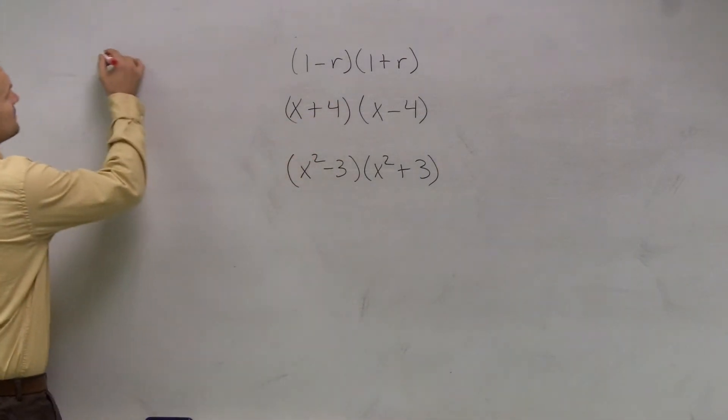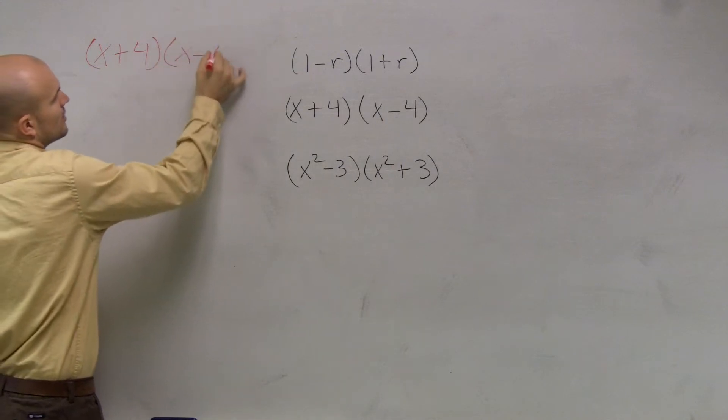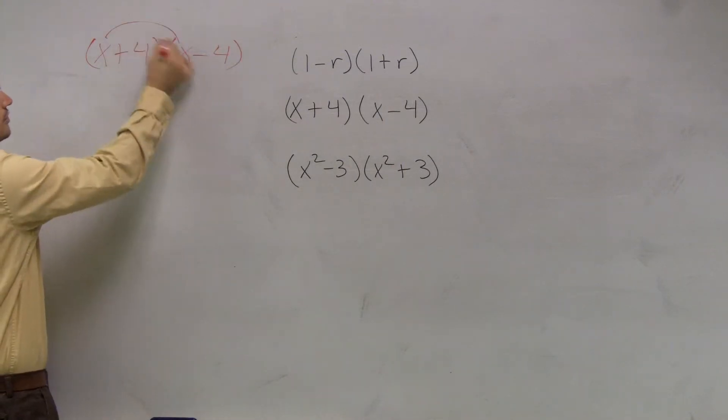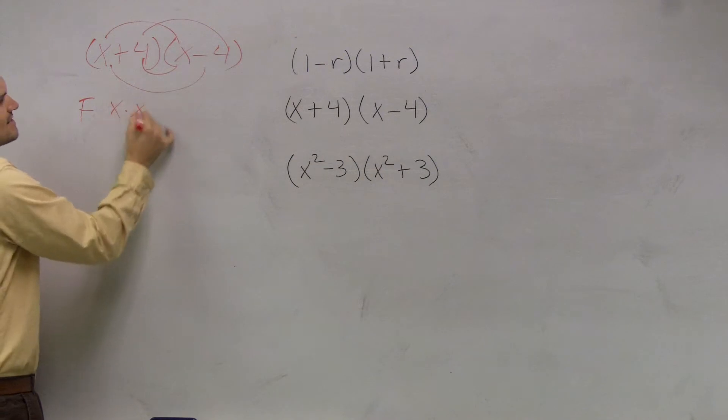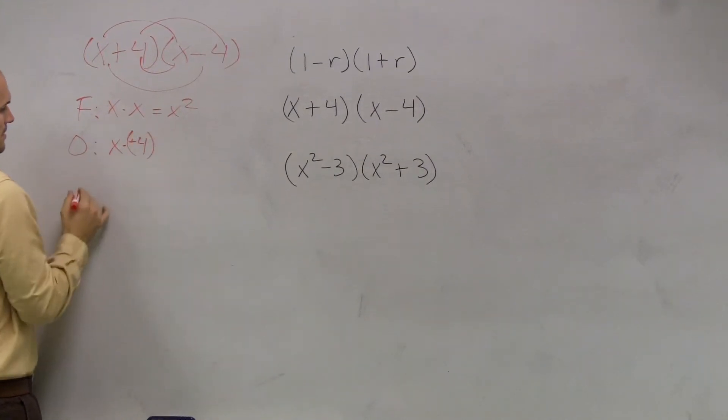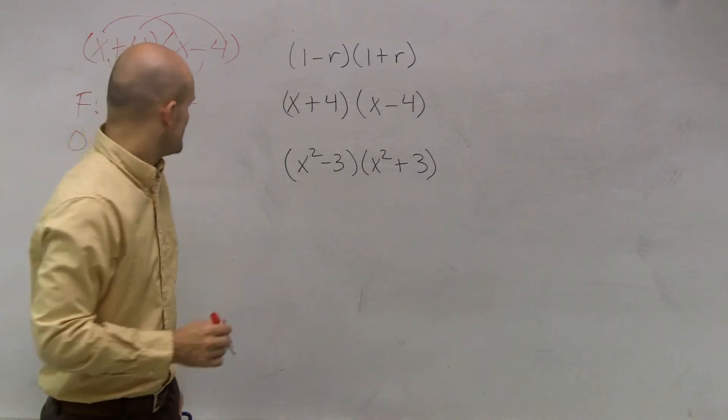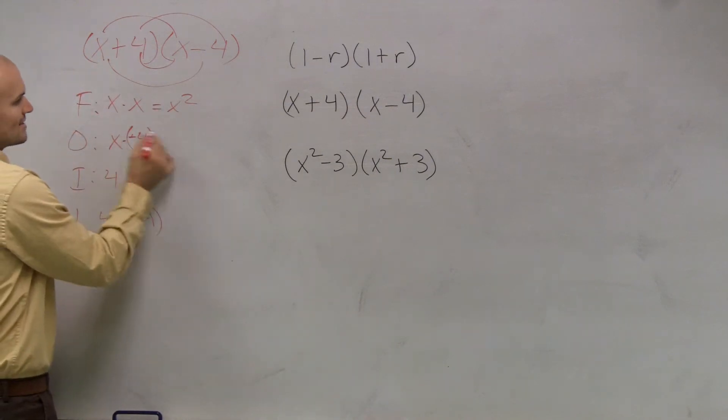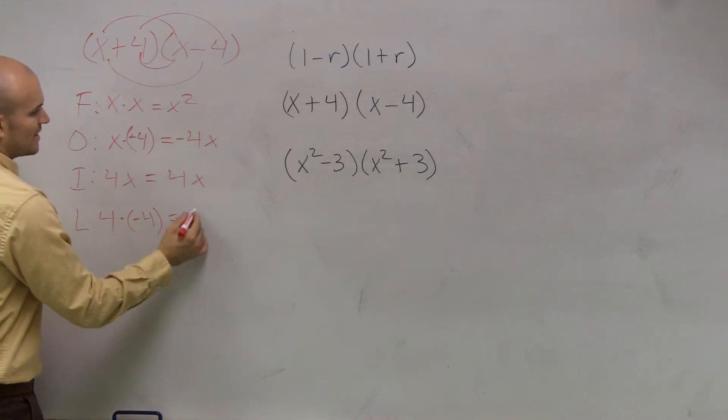Since this is review, I'm just going to kind of quickly go over this, especially if we already went over this in class. But remember, we can use FOIL. FOIL is going to be x times x, which is x squared. The outer is going to be x times negative 4. The inner is going to be 4 times x. And the last is going to be 4 times negative 4. So when I have x times negative 4, that gives me negative 4x. 4 times x gives me 4x. And 4 times negative 4 gives me negative 16.